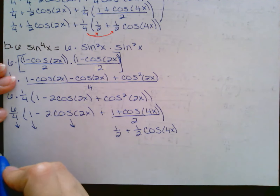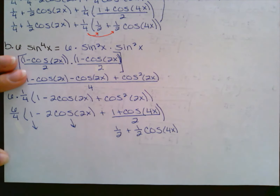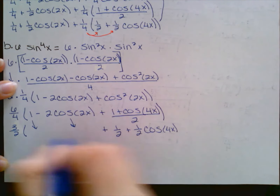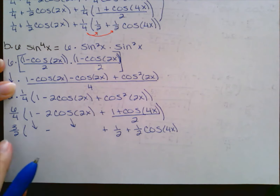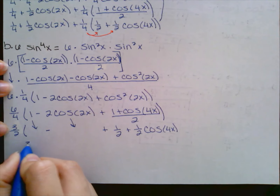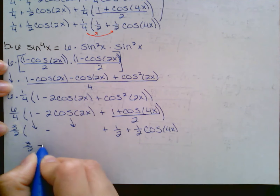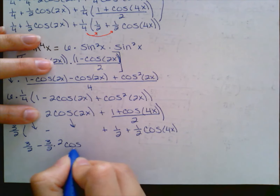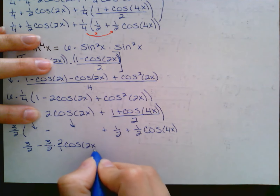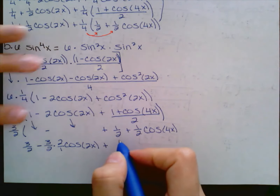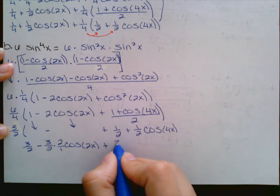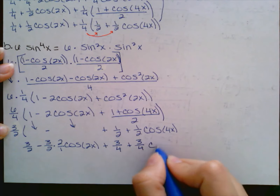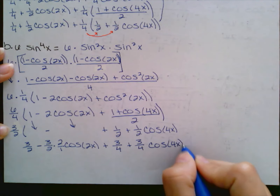Six over four simplifies to three over two. So I have three-halves times: one minus two cosine of two x plus the quantity one-half plus one-half cosine of four x. Distributing: three-halves times one is three-halves; three-halves times negative two cosine of two x is negative three cosine of two x; three-halves times one-half is three-fourths; and three-halves times one-half cosine of four x is three-fourths cosine of four x.